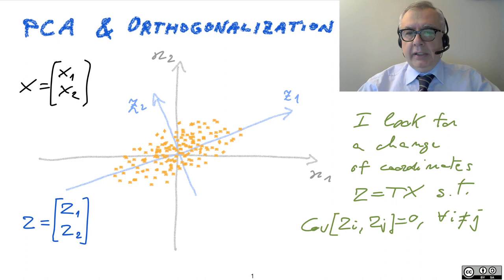As you can see, I have assumed that my data are zero mean. So X1 and X2 are zero mean. And the same holds for Zeta1 and Zeta2 because this transformation is not going to affect the mean. So this is the setting.